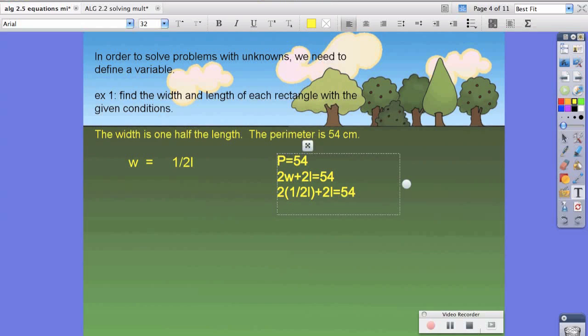Now two times one half l is just l, plus two l equals 54. Combining like terms, we have four l equals 54. Oh, sorry. We have one l plus two l's. That gives us three l's.